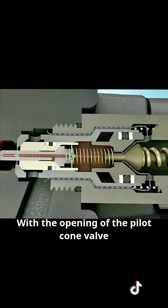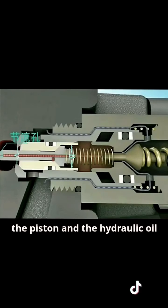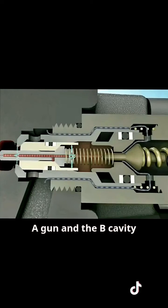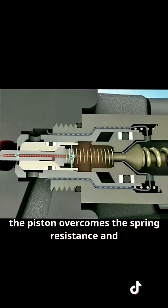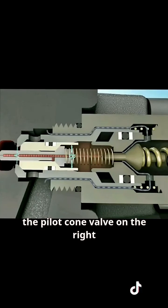With the opening of the pilot cone valve, the flow generated through the orifice on the piston and the pressure difference between cavity A and cavity B causes the piston to overcome the spring resistance and move to the main cut-off surface of the pilot cone valve on the right.